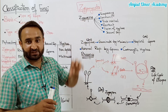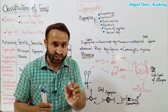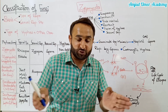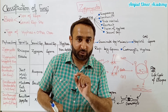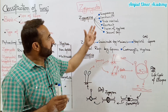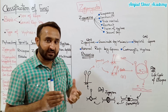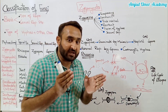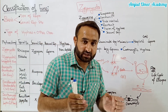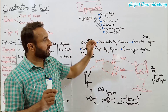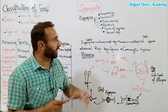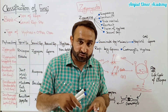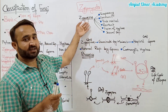Zygospores bante hain. Ye basically gametangia hoti hain - cells ya structures jo gametes, yani male aur female gametes, paida karti hain. Jab gametes mil jaenge to zygote banega, jo diploid hoga. Ye temporary stage hogi - zygote dormant ho jayega, yani inactive ho jayega, germinate nahi karega. Iske gird ek thick wall ban jati hai taki unfavorable environmental conditions ko resist kar sake. Ye fusion of hyphae ka result hai, is liye ye sexual reproduction hai kyon ke do different strains ki do different hyphae mil rahi hain aur genetic material exchange ho raha hai. Ise zygospore kehte hain.